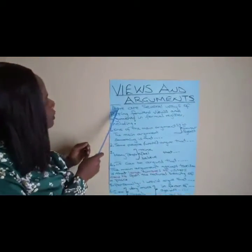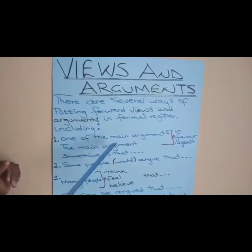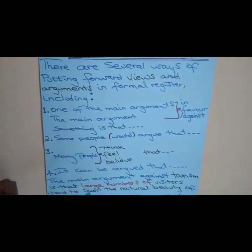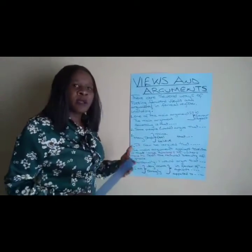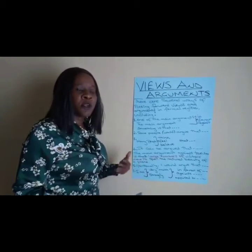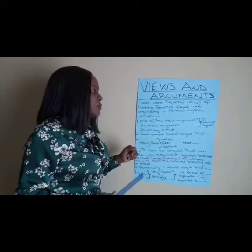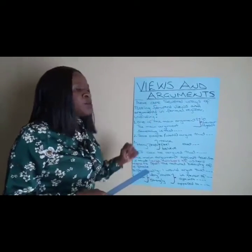Looking at the chart, there are several ways of putting forward views and arguments in formal register, including the following. Number one: 'one of the main arguments in favor or against.' You could be having an argument and you say 'one of the main arguments,' meaning there are several arguments but you want to highlight the main one, in order to make your argument strong.